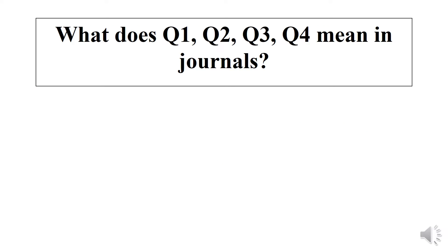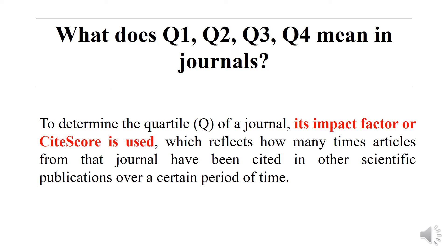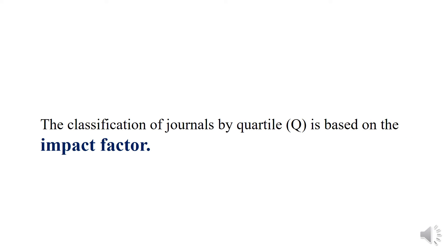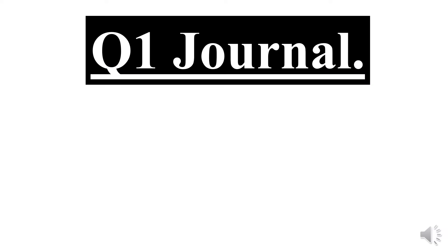What does Q1, Q2, Q3, Q4 mean in journals? To determine the quartile of a journal, its impact factor or cite score is used, which reflects how many times articles from that journal have been cited in other scientific publications over a certain period of time. The classification of journals by quartile is based on the impact factor.